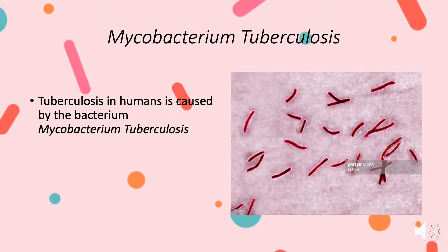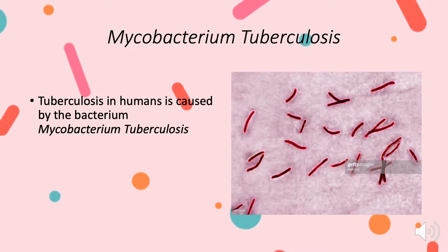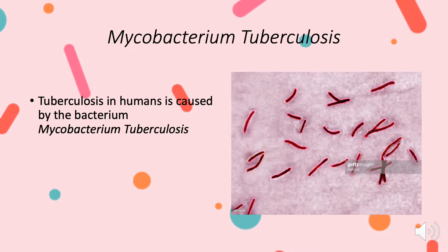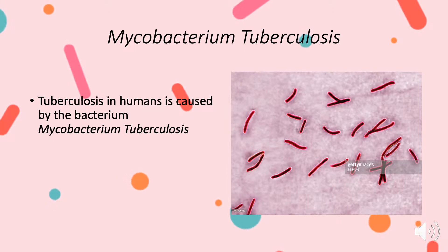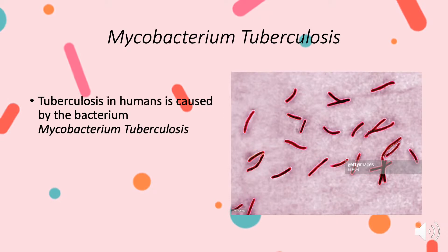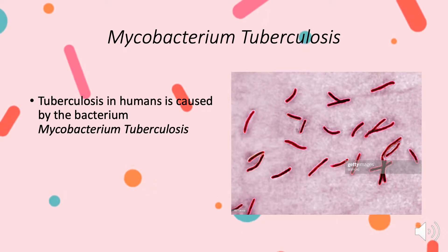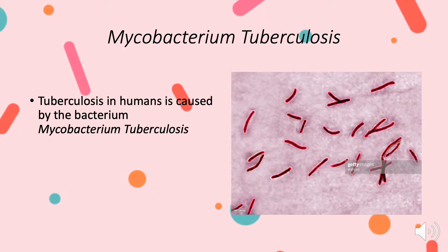Tuberculosis in humans is caused by the bacterial mycobacterium tuberculosis. It is a non-motile obligate anaerobe, which means that they will die in the presence of oxygen. They are rod-shaped, as shown in the image on this slide, also known as bacilli, and they are about 2 to 4 micrometers in length.